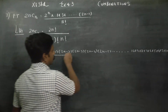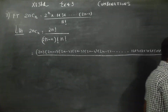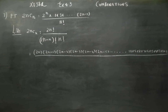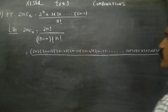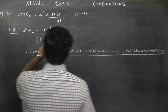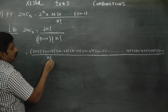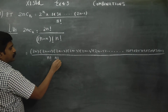So we have 2n factorial divided by — is it visible? — divided by 2N minus N factorial, which gives us N factorial. This is 1 into N factorial, right?